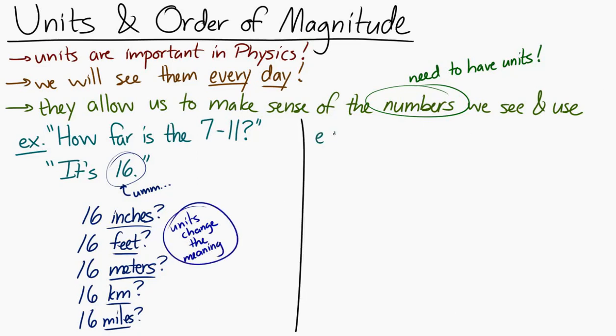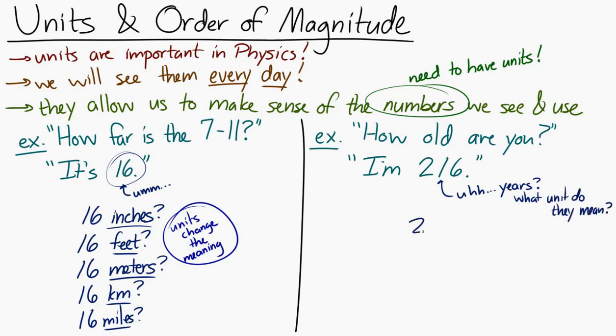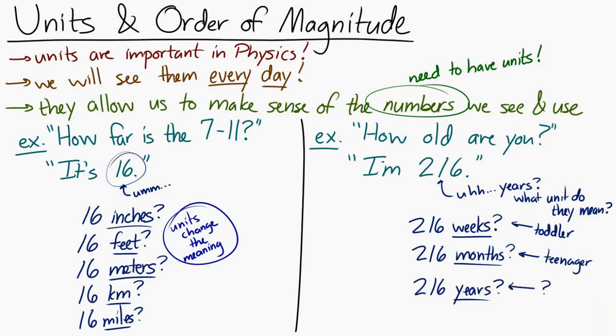Another example would be if you ask someone, how old are you? And the person responds, I'm 216. So normally we answer that question in units of years. But if someone is answering 216 years, that's a little suspicious. So you'd want more information. You'd want to know what unit they mean, what unit they're measuring in. Are they 216 weeks old? Because then it's like my daughter's age. Are they 216 months old? Then it's like one of my students' ages. If they're 216 years old, you probably have some follow-up questions about that. So units are incredibly important to make sense of the numbers that we see.